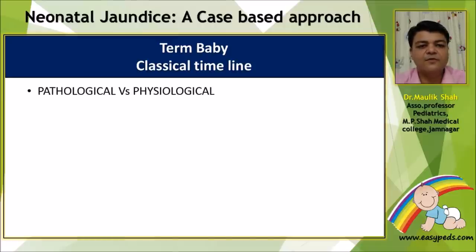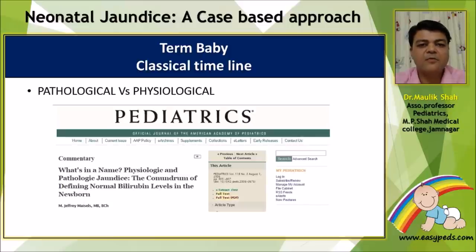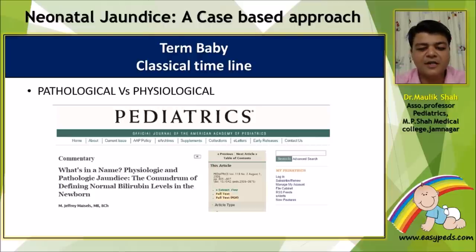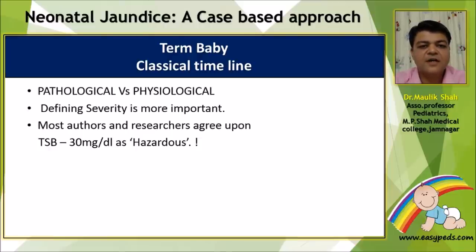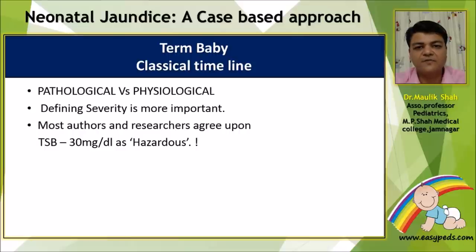Most term babies follow a classical jaundice timeline. The first question teachers ask students is whether it is pathological or physiological. However, a commentary published by Maisels in Pediatrics asked, 'What's in a name — physiological or pathological jaundice?' In practical day-to-day life, when we consider a term baby with jaundice, what we need to define first is severity rather than the name. We must look at bilirubin levels and associated risk factors. Most authors agree that total serum bilirubin of 30 mg/dL or more is hazardous and would lead to toxic effects on the brain.